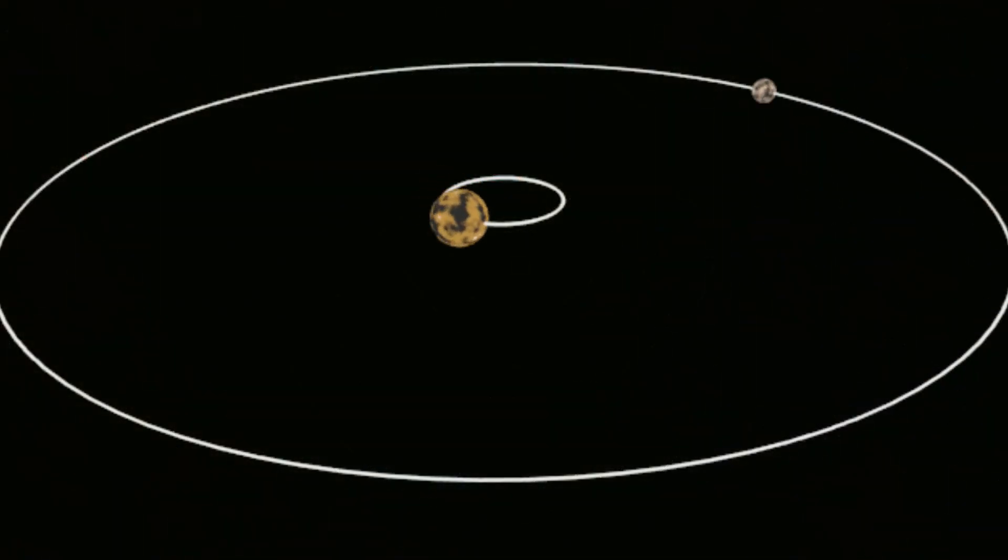However, the Earth and the Moon are not perfectly aligned. The Earth rotates faster than the Moon orbits, and this creates a friction between the Earth's bulge and the Moon's pull. This friction acts as a break on the Earth's rotation, slowing it down gradually.